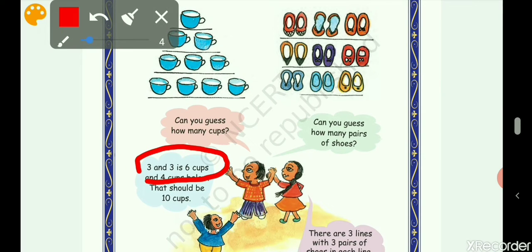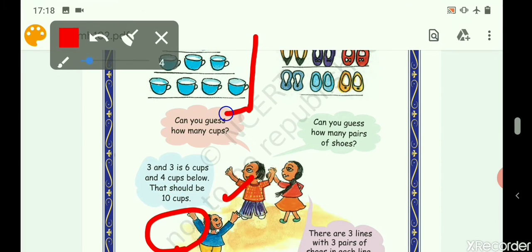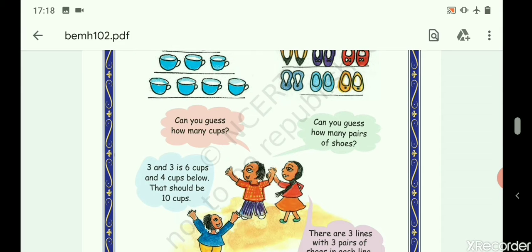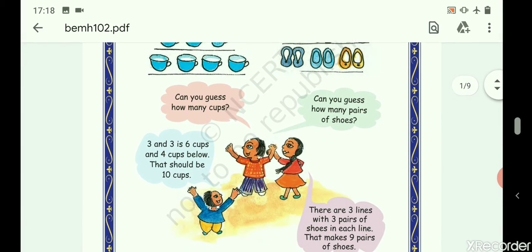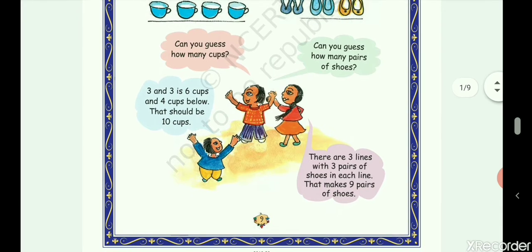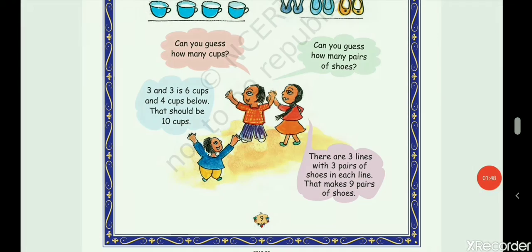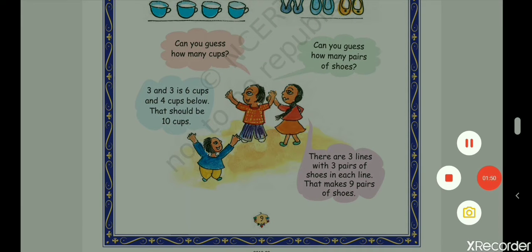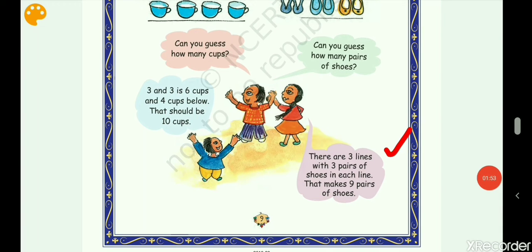Yes, they have added like this: three and three is six cups and four cups below, so there should be 10 cups. We are right! We are right, but what we have, we are right, and here also.